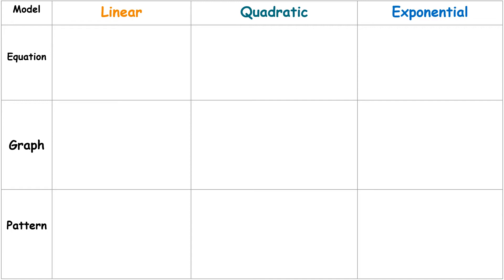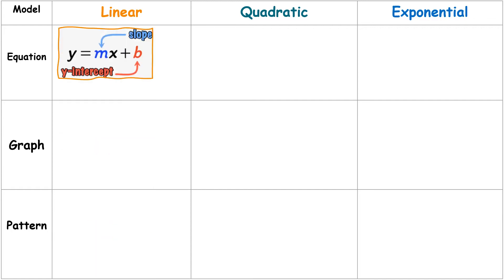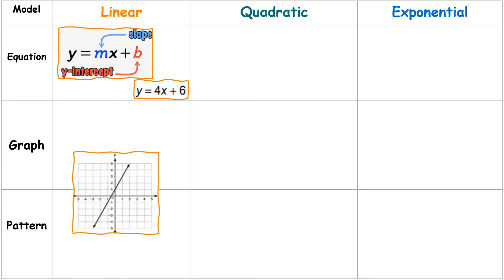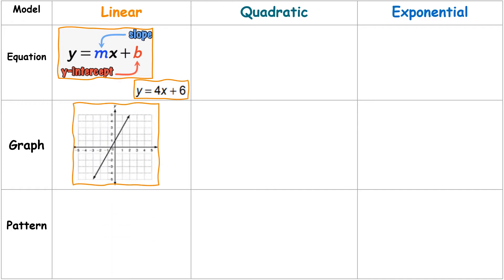The equation for a linear function is y equals mx plus b — you may know this as slope-intercept form, where m is the slope and b is your y-intercept. Here's an example of a linear function equation. The graph of a linear function is a straight line.